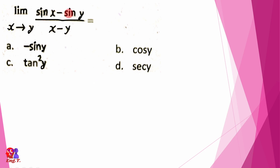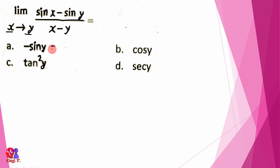The next question is sin x minus sin y divided by x minus y. In this case the variable is not going to be j. X tends to 1; if j tends to the line, variable is constant. The option is not going to be the value of j.